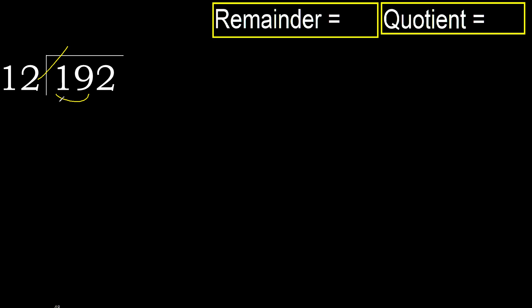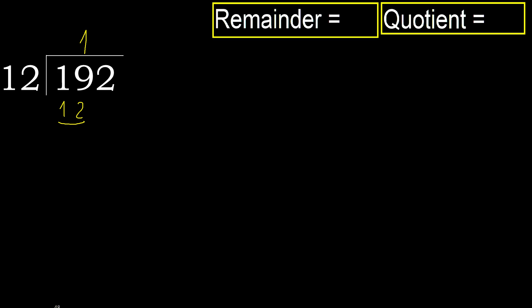12 multiplied by 1 is 12, which is not greater. So 19 minus 12 equals 7. Next.